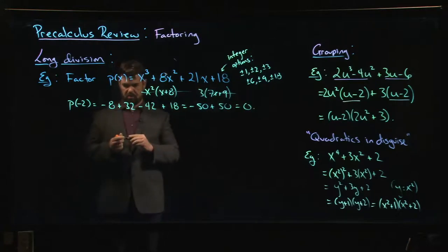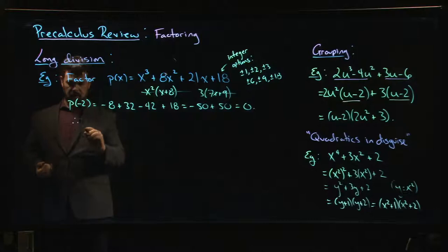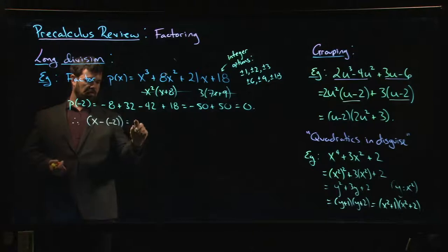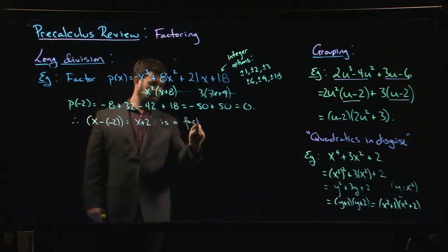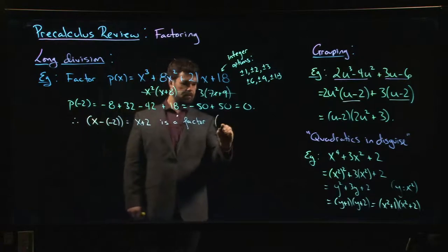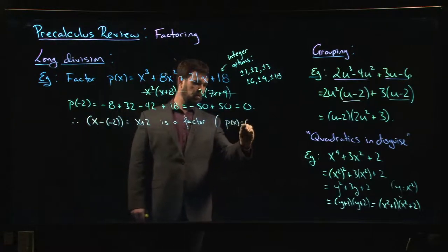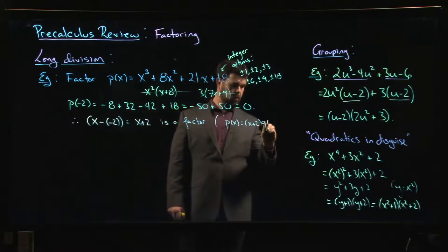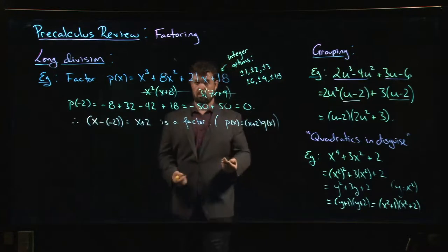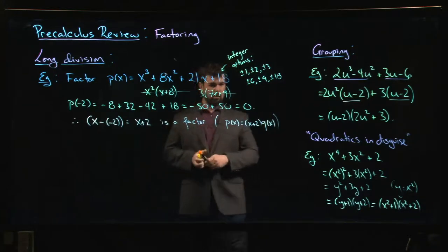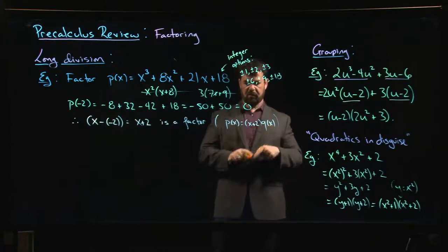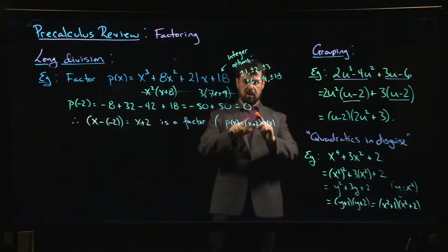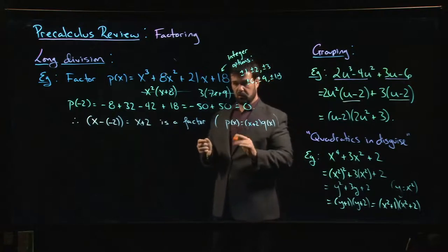We're in business. So the Factor Theorem now tells me that x minus minus 2, which is x plus 2, is a factor. And that means that I can write P of x as x plus 2 times some unknown polynomial Q of x. And now I want to find Q of x. So how do I find Q of x? Well, I guess I could divide both sides by x plus 2. So to find Q of x, I have to take P of x, my original polynomial, and I've got to divide by x plus 2. Here's where long division comes in.